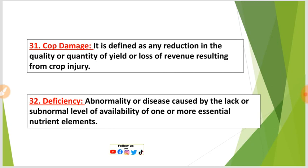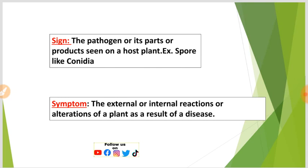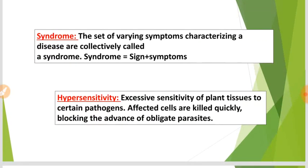Number thirty-two: Deficiency — abnormality or disease caused by the lack or subnormal level of availability of one or more essential nutrient elements. Sign: the pathogen or its parts or products seen on a host plant, such as spores or conidia. Symptom: external or internal reactions or alterations of a plant as a result of disease. Syndrome: the set of varying symptoms characterizing a disease — syndrome equals sign plus symptoms.